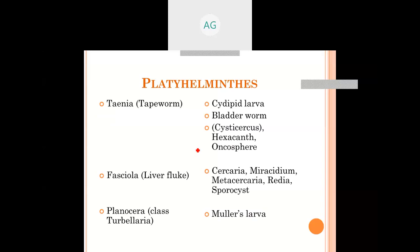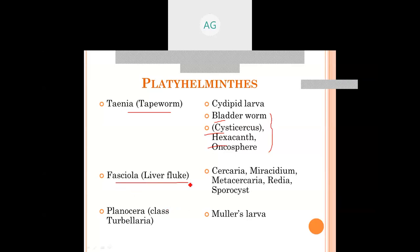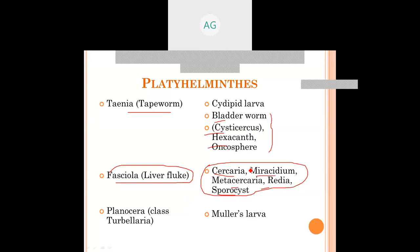In Platyhelminthes, we have studied many larvae. These include: Cysticercus, Hexacanth, Onchosphere, and bladder worms. In Fasciola, the life cycle includes a whole sequence of larval stages. Arranged in order: Miracidium is first, then Sporocyst, then Redia, then Cercaria, then Metacercaria. You are familiar with these larvae.